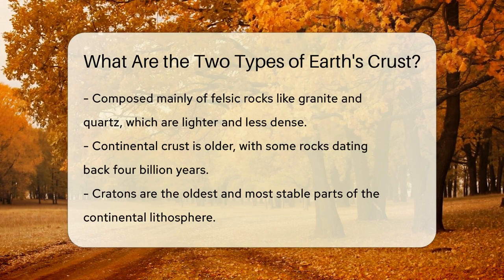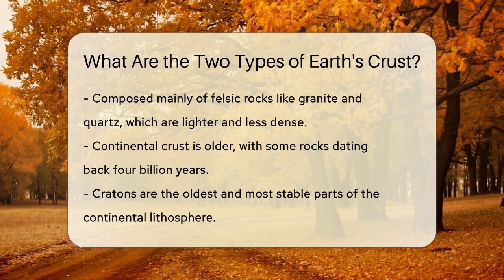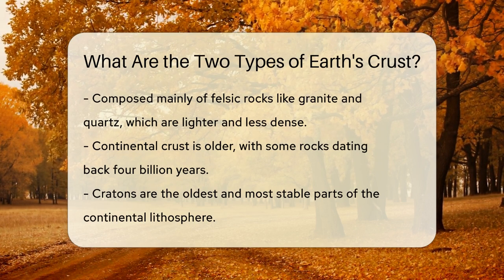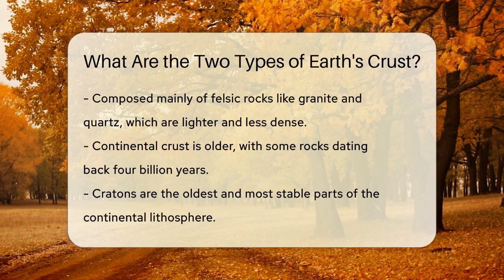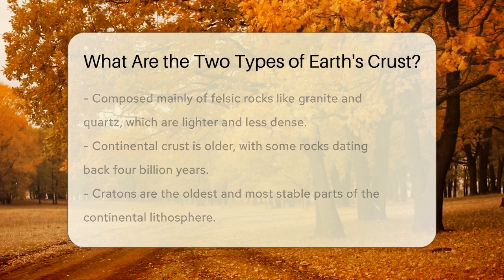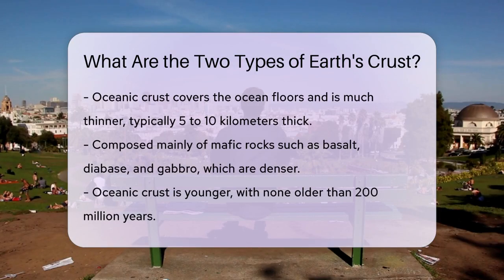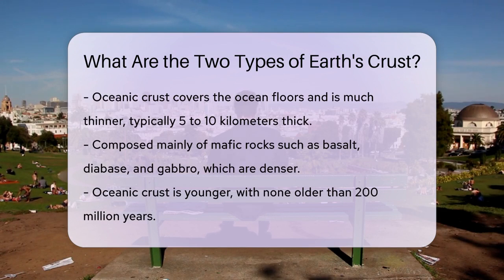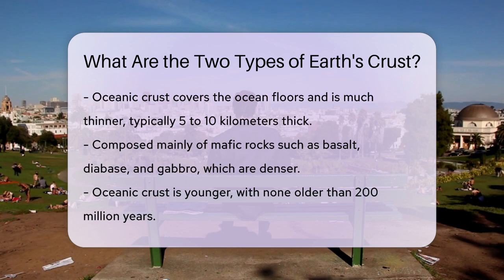On the other hand, we have the oceanic crust, which covers the ocean floors. This crust is much thinner, typically ranging from 5 to 10 kilometers in thickness. Oceanic crust is denser and heavier, composed mainly of mafic rocks like basalt, diabase, and gabbro. These rocks are rich in magnesium and iron, making them denser than the felsic rocks of the continental crust.